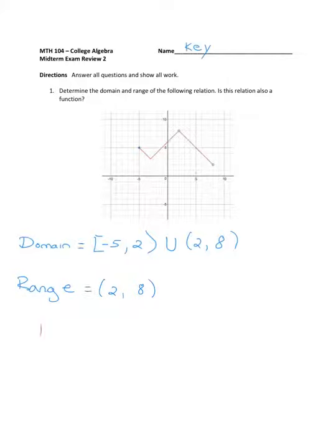So I have the domain and the range. Now is this thing a function? And the answer is yes. Every single point that you choose on this graph, there's never a second one above it or below it. If for some reason there happened to be a point, let's say like right here, we would have something that is not a function, but that did not happen. So the answer to this is yes, it is a function.